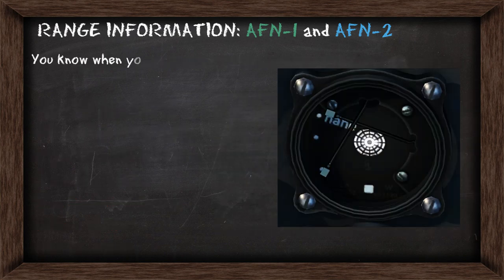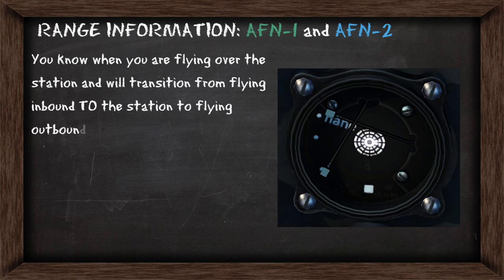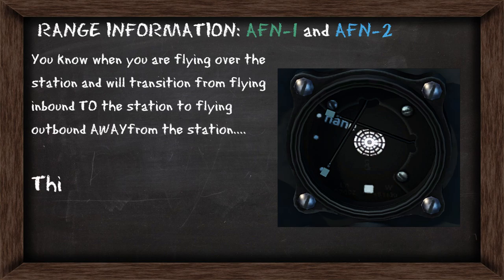If you're in conditions where you can't see the station itself, it's important to know when you've flown over it, because this will tell you that you're about to transition from flying inbound towards the station to flying outbound away from the station. When you do that, this light will illuminate and the needles will fully deflect to one side.